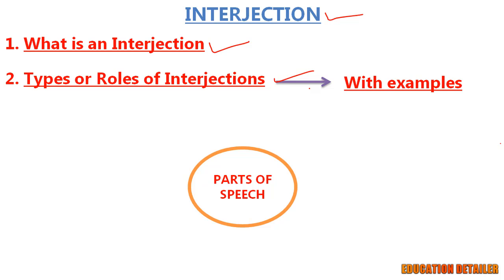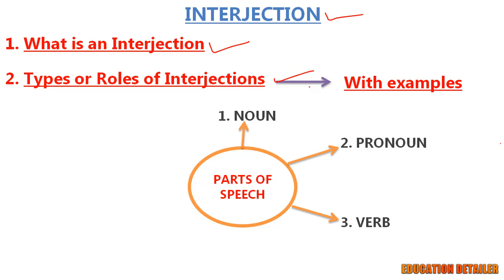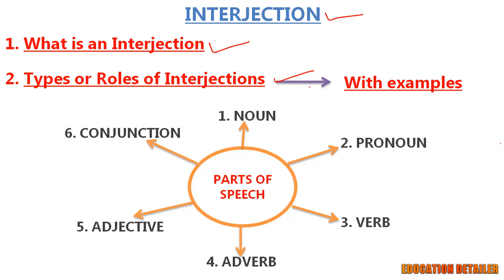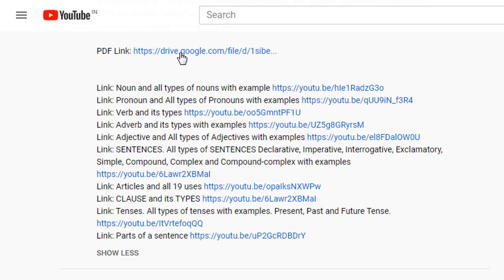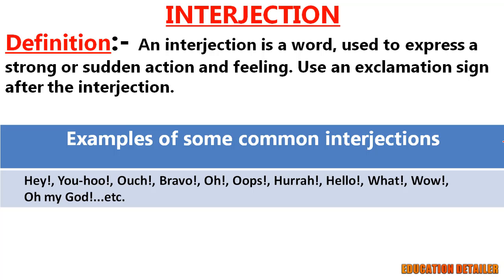I have already discussed each and every detail about a noun, pronoun, verb, adverb, adjective, and conjunction. If you haven't seen those yet, go to the description — I have given links for all these lessons. Also download the PDF linked in the description with questions and answers related to this lesson. Try to do all of them without seeing the answers and check how many you answered correctly. So now let's start with the definition of an interjection.